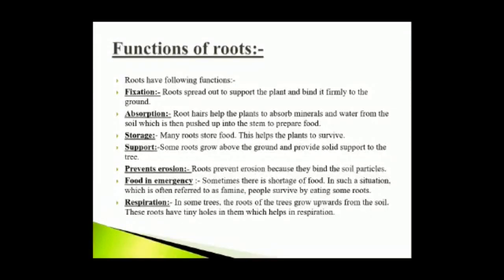Functions of roots — Fixation: Roots spread out to support the plant and bind it firmly to the ground. They prevent the plant from getting uprooted by strong winds or storms. Uprooted means a plant that has been pulled out of the ground along with its root. Absorption: Root hairs help the plant to absorb minerals and water from the soil, which is then pushed into the stem to prepare food.